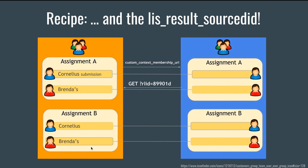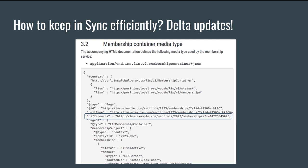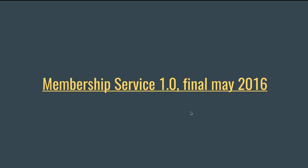If you do the same query for each assignment, you get all the LIS result source IDs and can discover all the grade locators. As an instructor, you can now set a grade for students who have never touched the activity and send a grade back to the host gradebook. Keeping membership in sync can be expensive, so there is a mechanism in the specification — the differences URL — where you just get what changed since last time you called. The first time you get the full membership, and then subsequently you use the differences URL to get only the changes. That's the Membership Service API, finalized since May 2016.